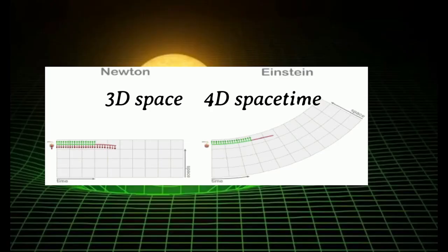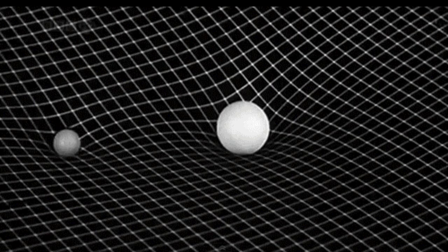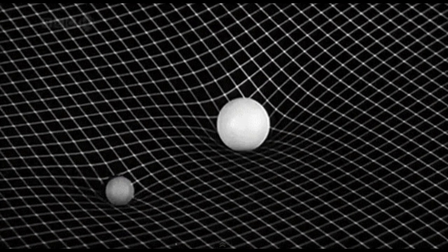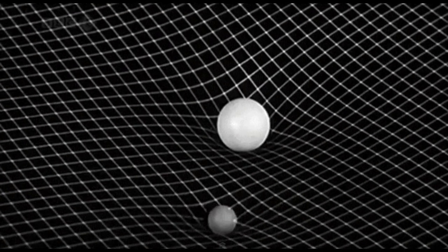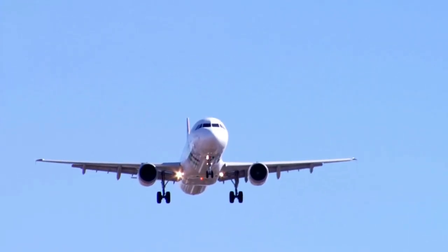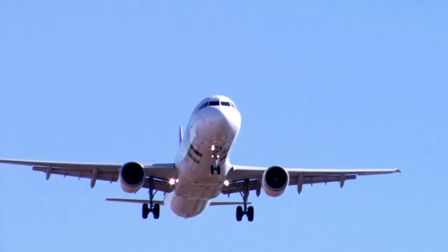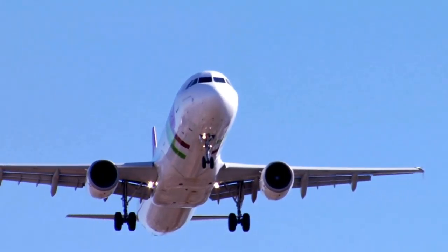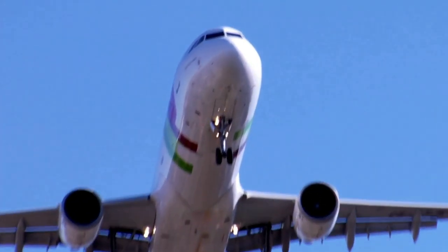Although objects in general relativity always follow straight lines in four-dimensional space-time, their paths appear curved to observers in our familiar three-dimensional space. This is akin to observing an airplane flying over hilly terrain. While it follows a straight line in three-dimensional space, its shadow on the two-dimensional ground appears curved.